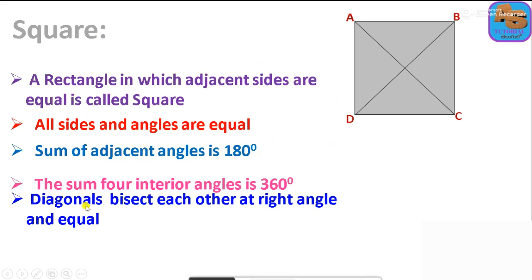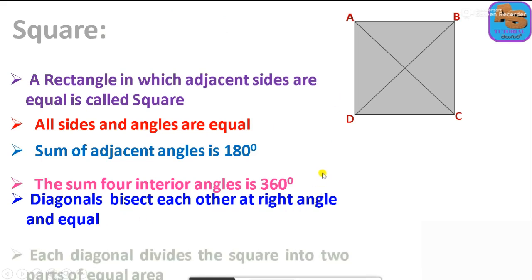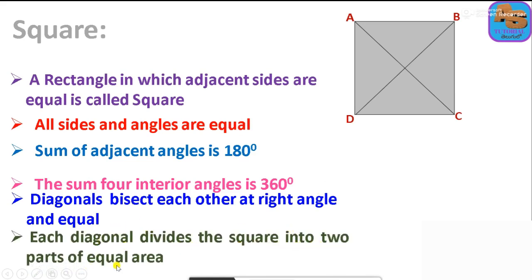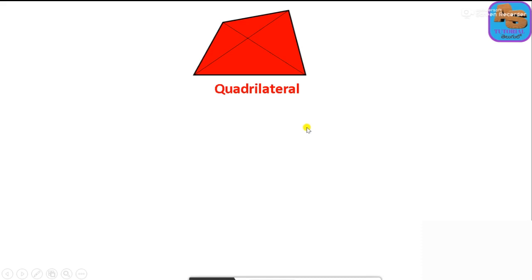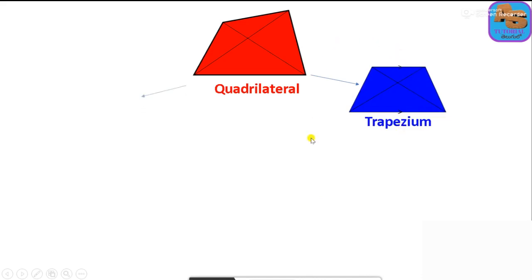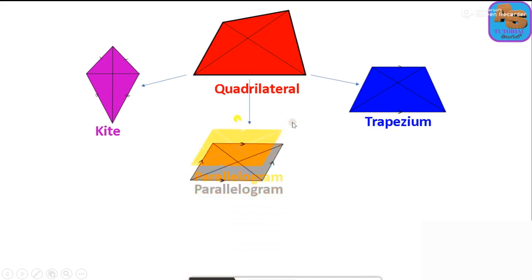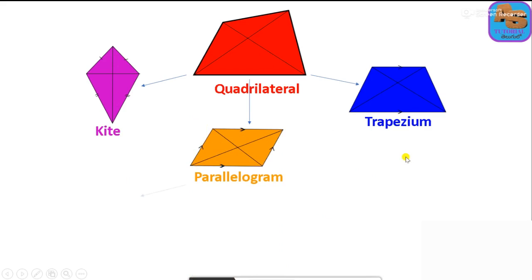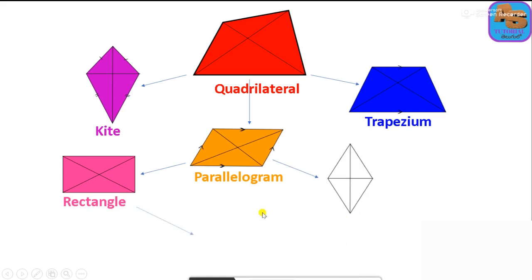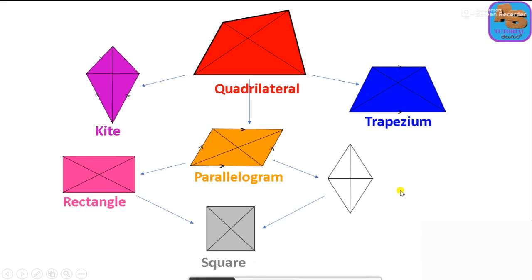Each diagonal divides the square into two triangles of equal area. To summarize: we have covered trapezium with one pair of opposite parallel sides, kite with two pairs of equal adjacent sides, parallelogram with two pairs of opposite parallel sides, rectangle, rhombus, and square. Thank you for watching.